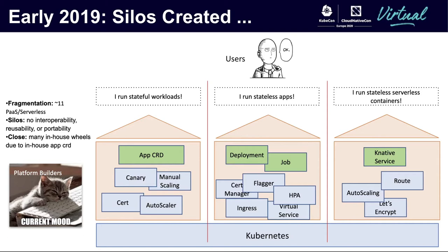Although all these platforms have unique traits, they also share a lot in common. For example, all of them require a Let's Encrypt service. But as platform builders, we have to implement this functionality in different forms again and again, since every platform speaks different APIs. We are creating more fragmentation, more silos, and more closed systems with in-house CRDs. This doesn't feel good.